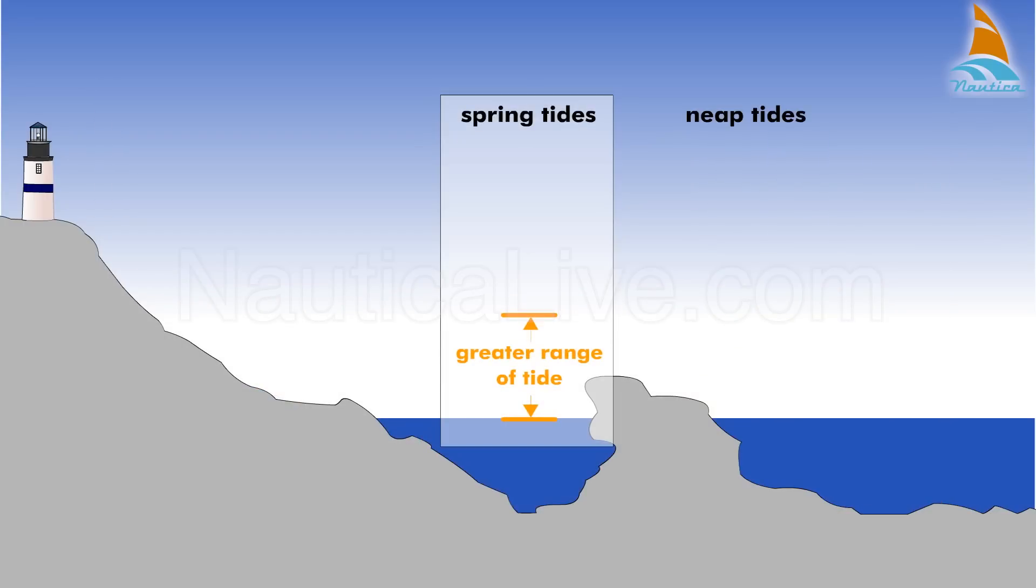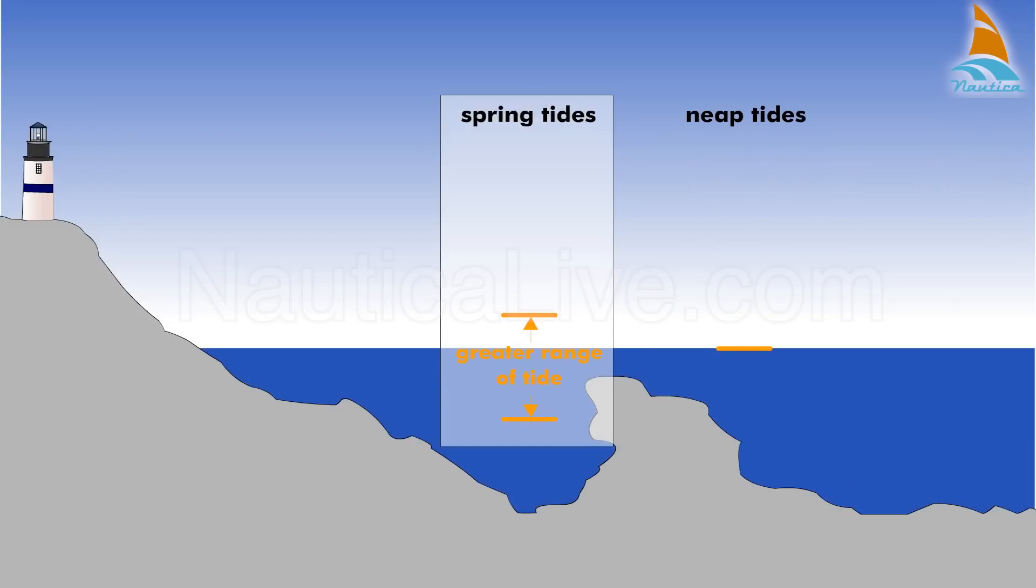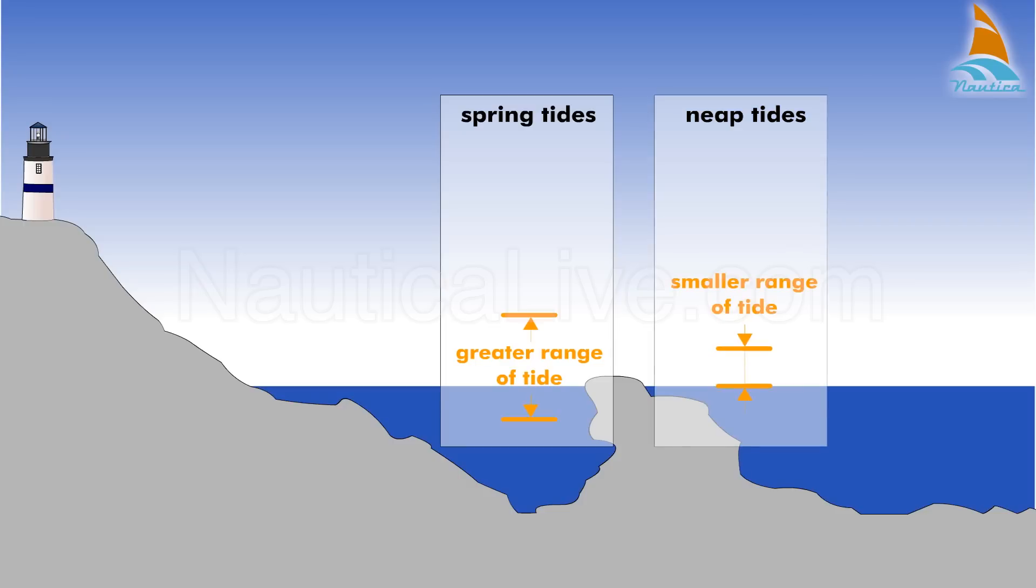Neap tides are tides with lower high tides and higher low tides than normal, in other words, a smaller range of tide.